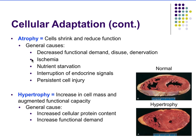Hypertrophy is when you increase in cell size — the opposite response from atrophy. If atrophy occurs because you're not using your cells enough, hypertrophy occurs because you're actually increasing the functional demand on that cell, so cells adapt to meet that demand. You'll have an increase in cellular proteins. So increased functional demand increases cellular proteins, which causes cell hypertrophy.